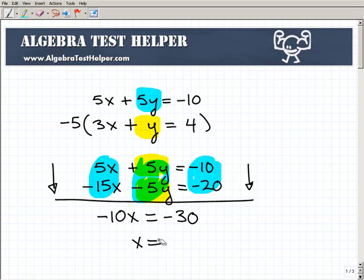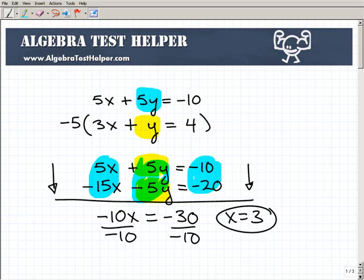X is going to be equal to, what I'm going to do is divide negative 10 by both sides. All right, I'm just going to take this step. So x is equal to a positive 3. And I'm done, right? Sort of like, wow.